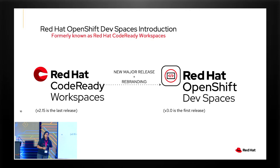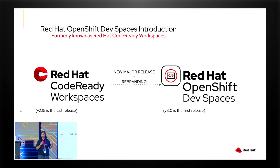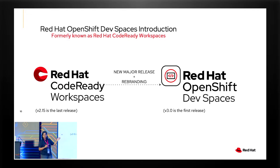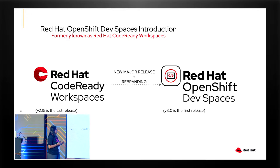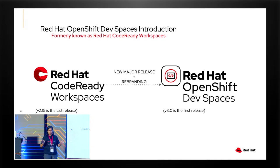Every feature we put in the product has to hit one of these buckets — that's the check gate for us. Now, I'm talking about Dev Spaces, but until May or June, we had a product called CodeReady Workspaces. We renamed that as Dev Spaces — these two are the same. Some of us keep saying CodeReady Workspaces and Dev Spaces interchangeably because CodeReady Workspaces is deep in our brain. The new name is OpenShift Dev Spaces.